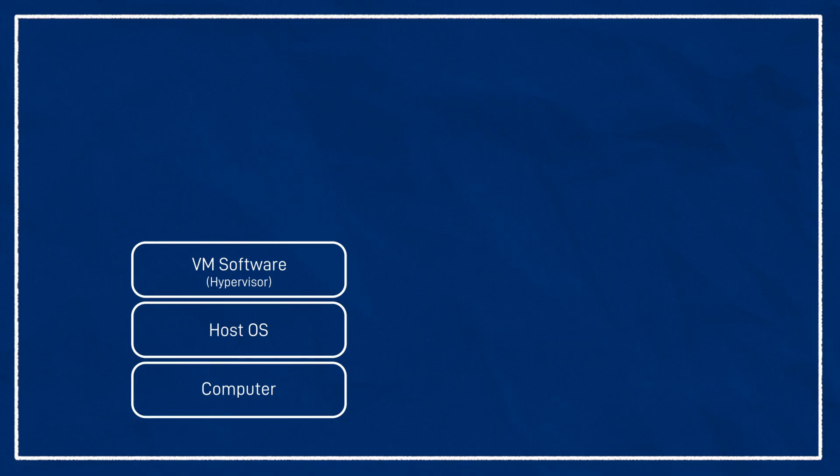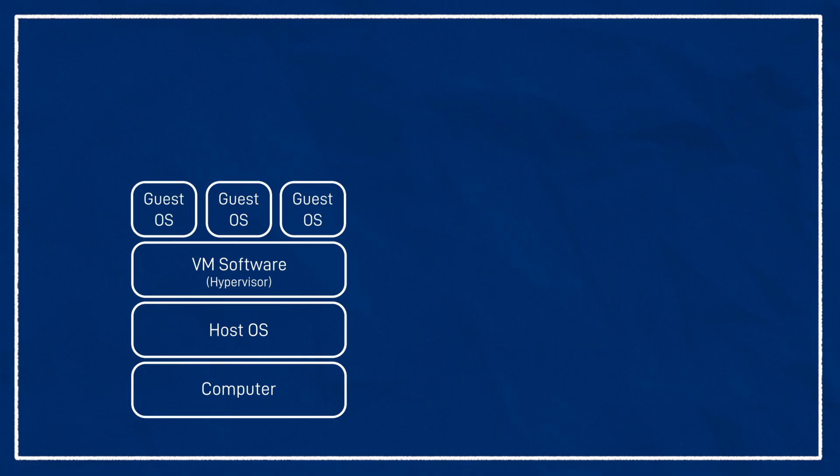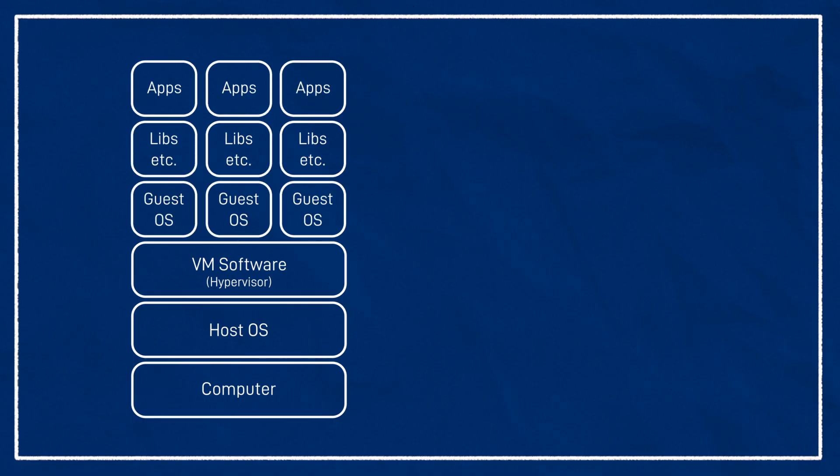VMs are a super handy tool because they let us run multiple operating systems, each with their own different libraries and applications, but they have some downsides. Because you're basically using your computer to run two or more entire operating systems, it's pretty heavy. You want plenty of resources like RAM, they take time to set up because you've got to install the whole OS, starting up and shutting down can be a bit slow, backing them up takes a lot of space, and so on. But Docker isn't a virtual machine — it uses something called containers.